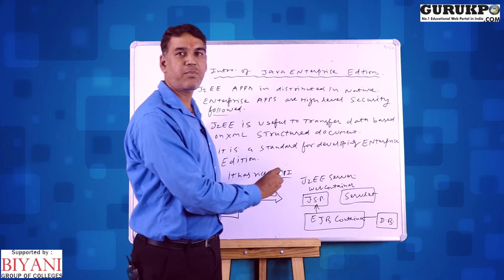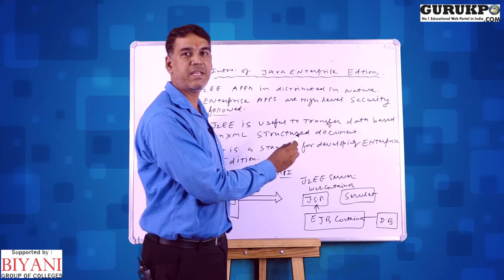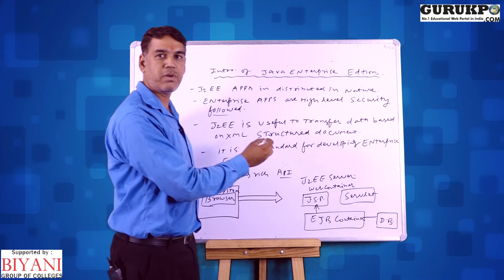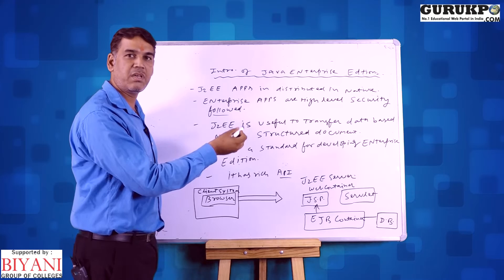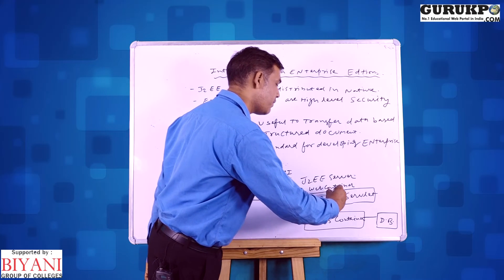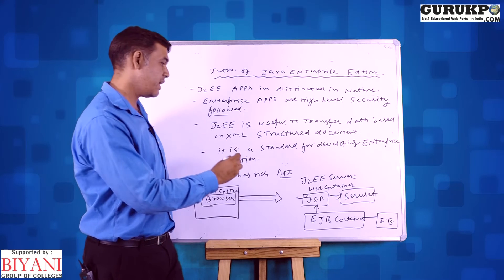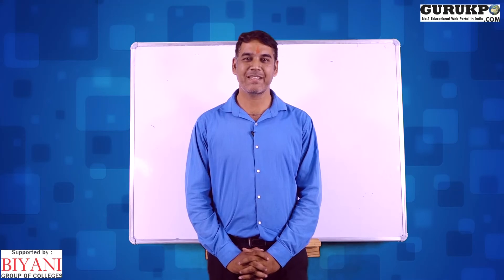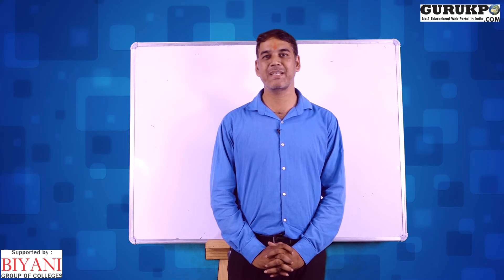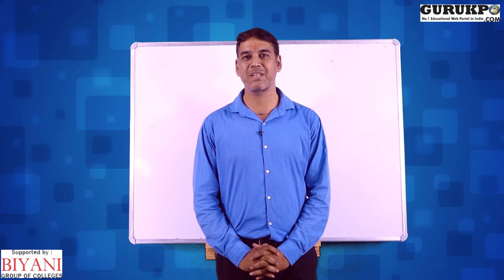We have another type of container called the EJB container. The EJB container gets information from the J2EE server. First, we give the views with JSP pages, then the business logic is written in the servlet and given to the EJB container. Thanks for watching my video. If you like my study material, please like, share, and subscribe to the Guru KPO channel.